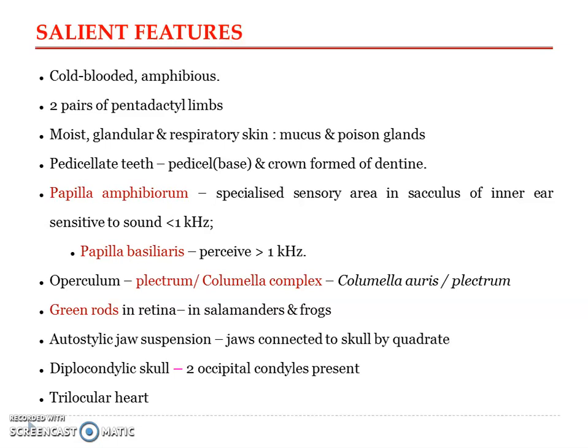The class Amphibia are the first vertebrates to shift from the aquatic to the terrestrial habitat. However, they could not complete their conquest onto the land, so they still have to visit water to complete their life cycle at certain points. They have a close association with the aquatic habitat. Amphibians are cold-blooded, amphibious vertebrates — poikilotherms — meaning their body temperature is not constant; it varies with the surrounding environment.